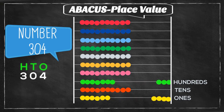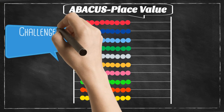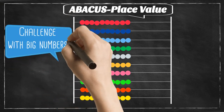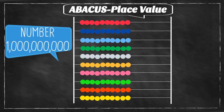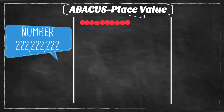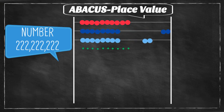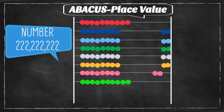Like this, we can give different numbers and challenge the kid depending on their understanding level. If the child seems interested, you can try numbers like one billion, where only one bead in the billions place is needed, or even 222,222,222 where we need to move two beads from the millions place to the ones place each.